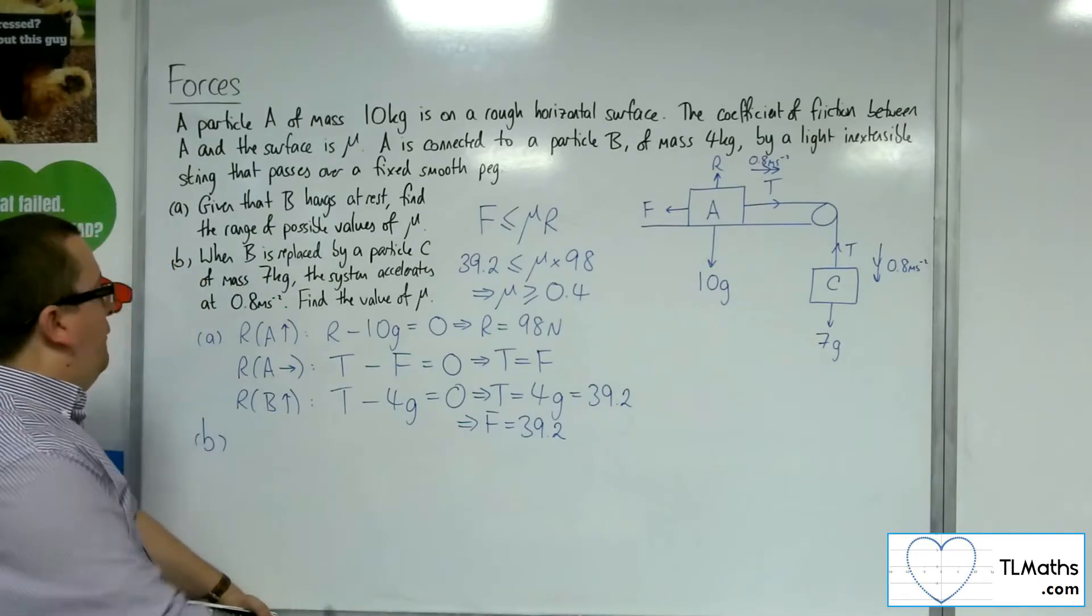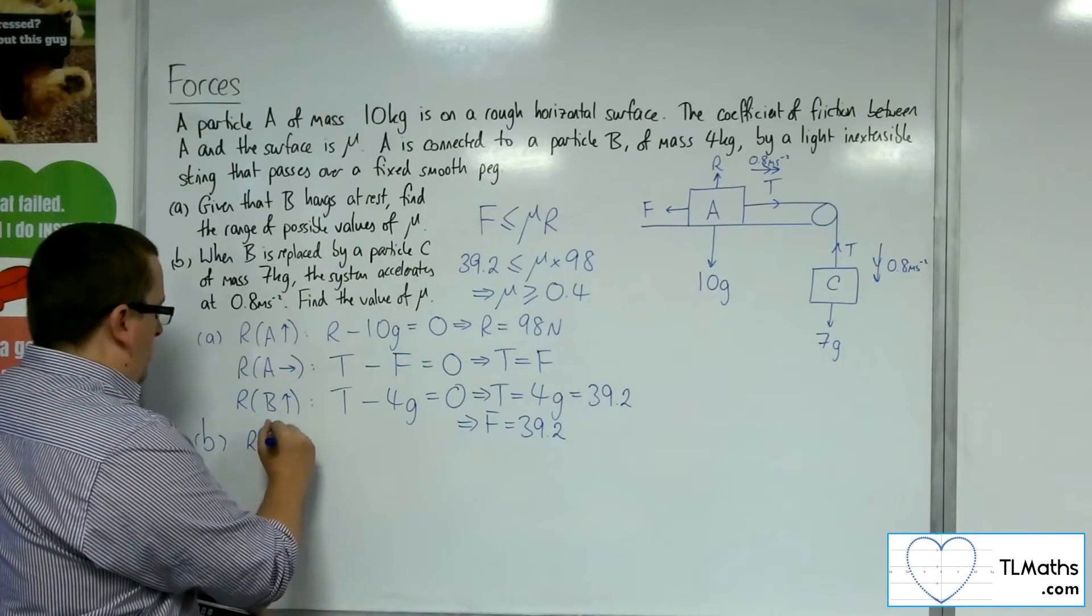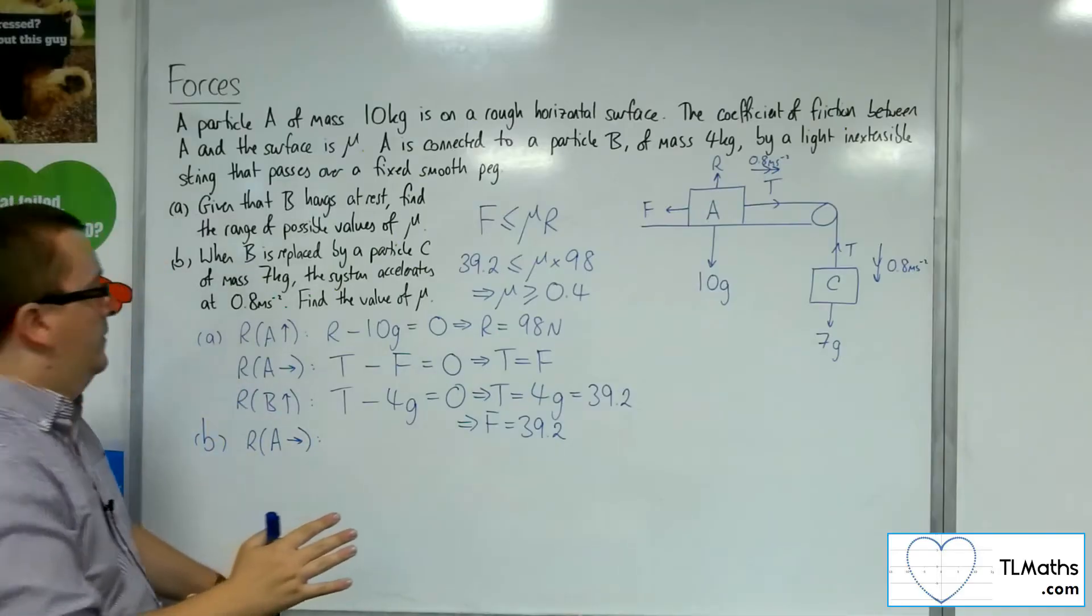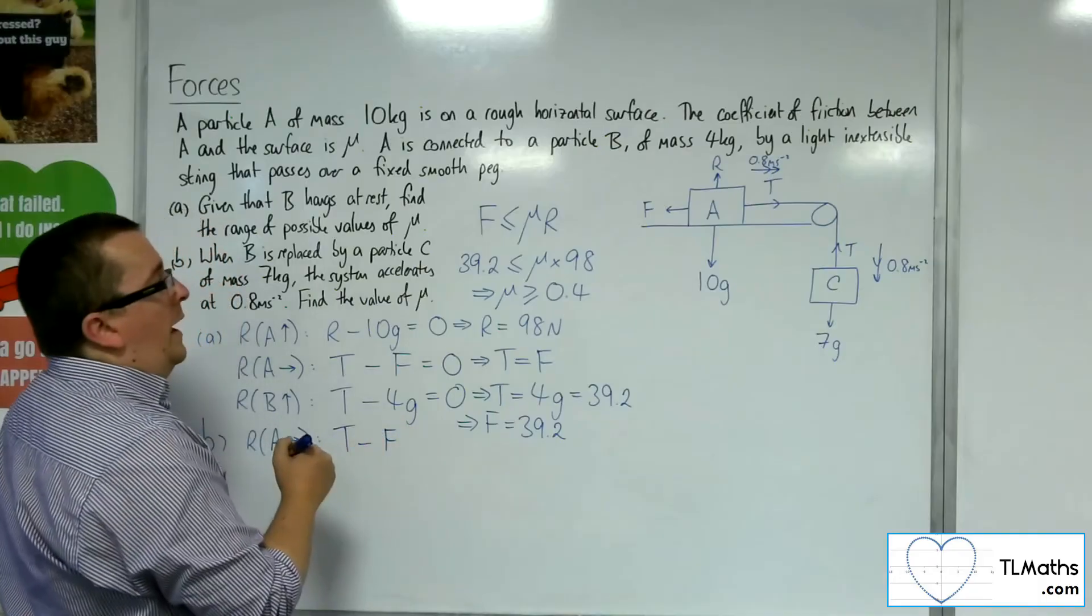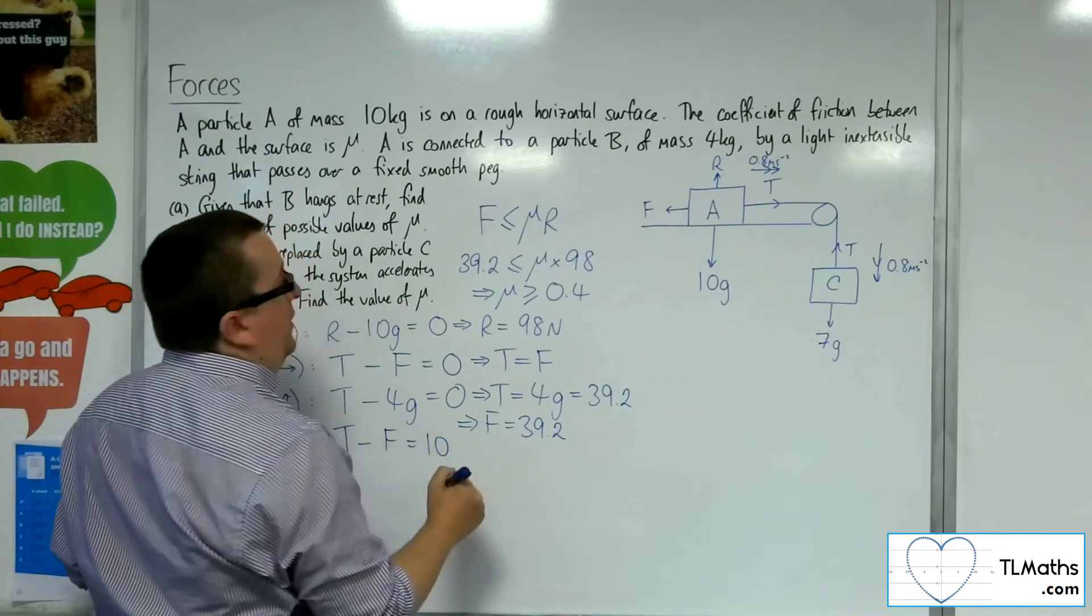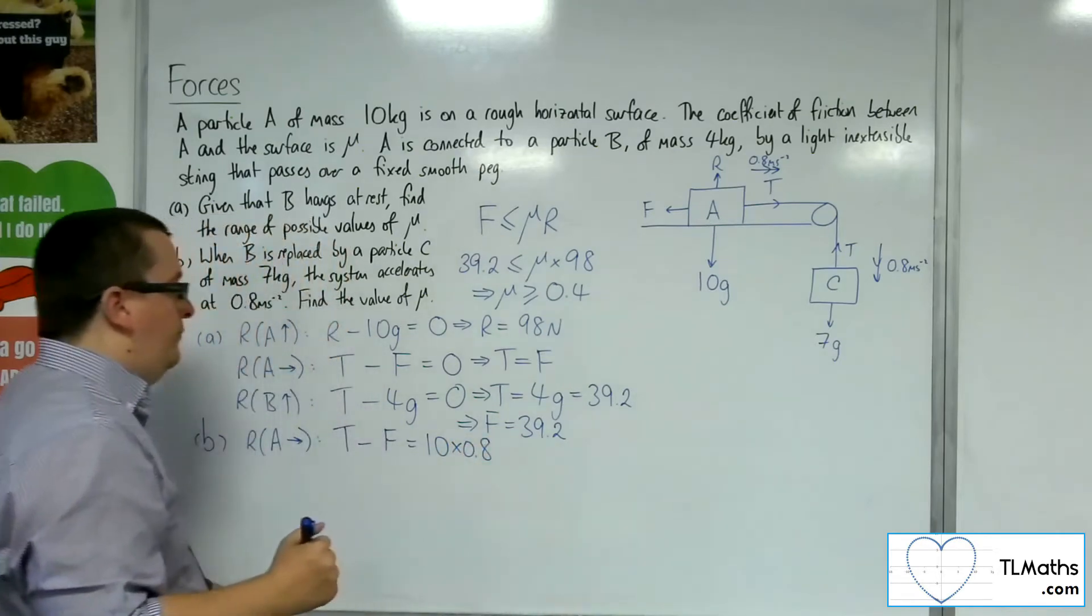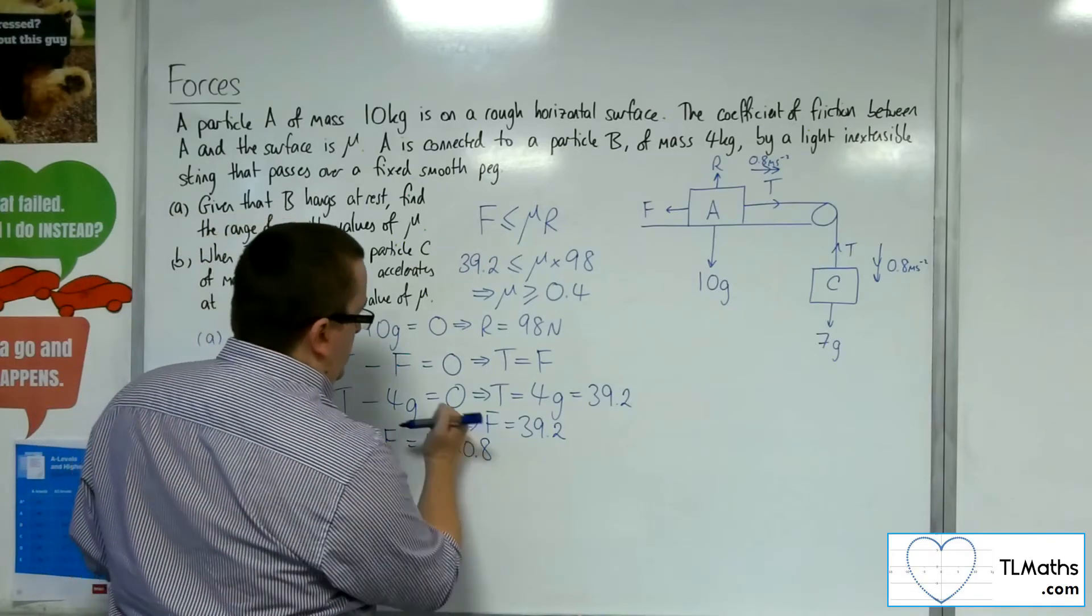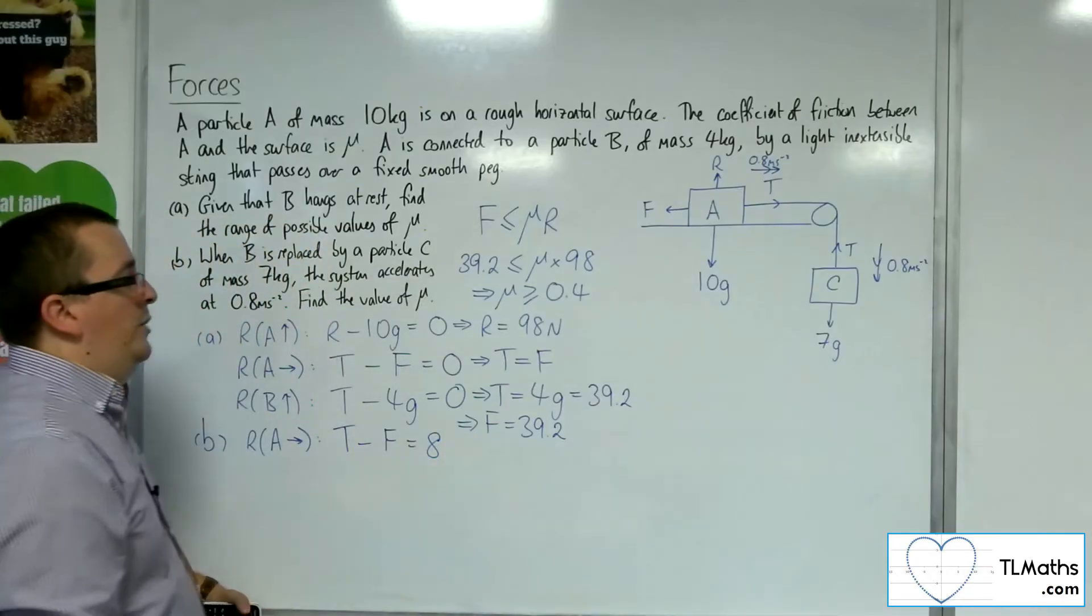So if I now resolve A in the direction of travel to the right, I'll have T take away F is equal to the mass 10 times acceleration 0.8. So 10 lots of 0.8, which is just 8. So I've got that equation.